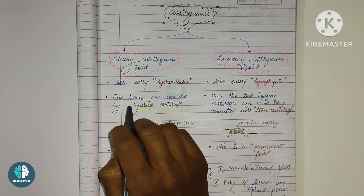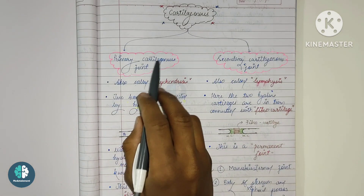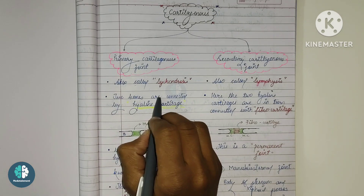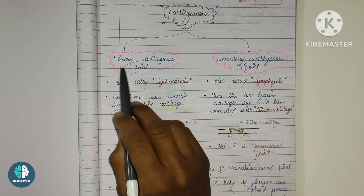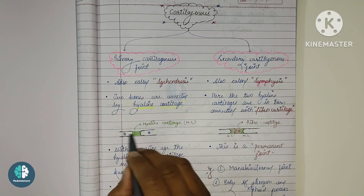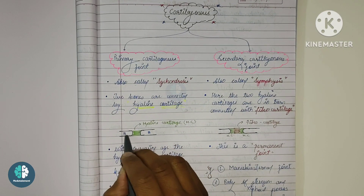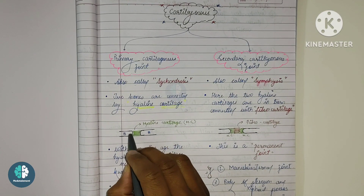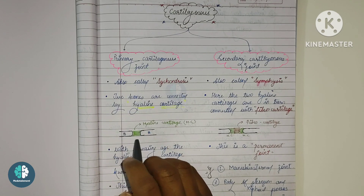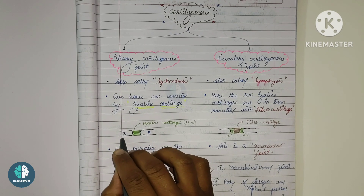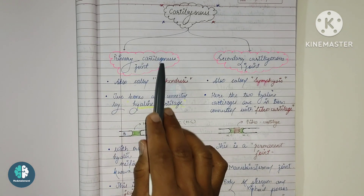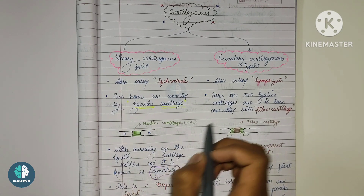The primary cartilaginous joint is when two bones are connected by hyaline cartilage. The two bones are connected with hyaline cartilage in between. So if there is hyaline cartilage between two bones, then we can say it is a primary cartilaginous joint.